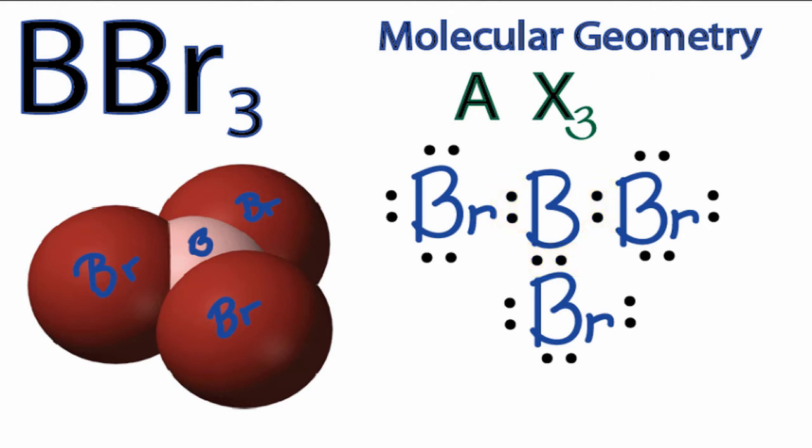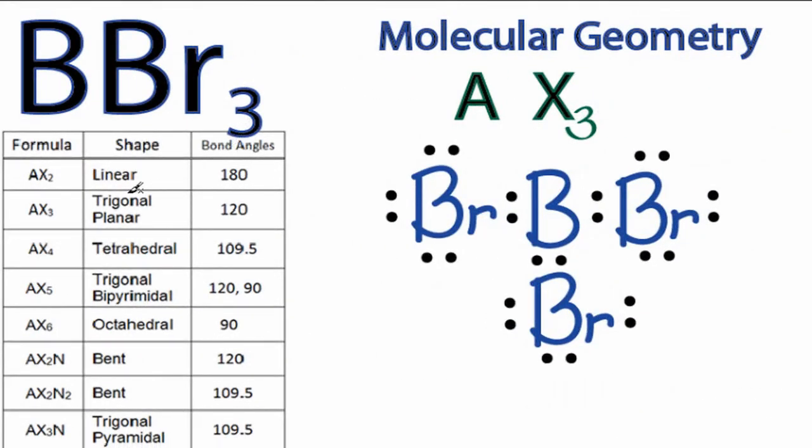You could have memorized that AX3 is trigonal planar, or if you had a table available, you could look it up. So as we go down our table, we have AX2, and right below it is AX3, which is trigonal planar, and the bond angles are 120 degrees.